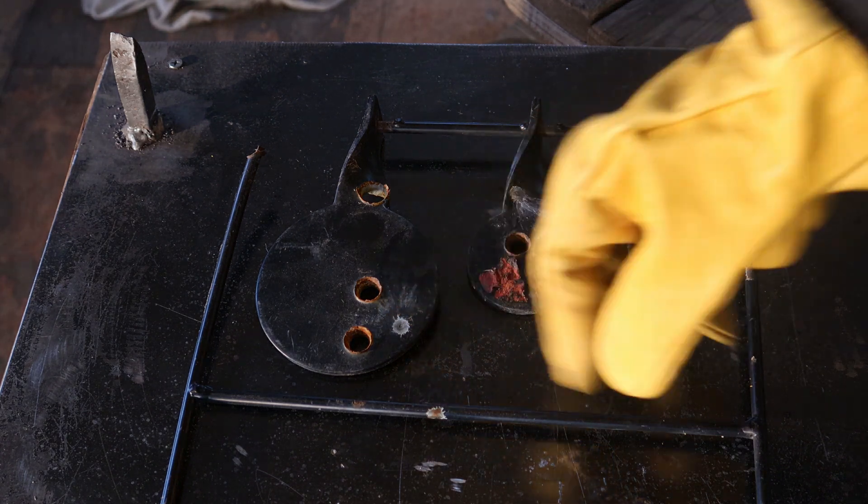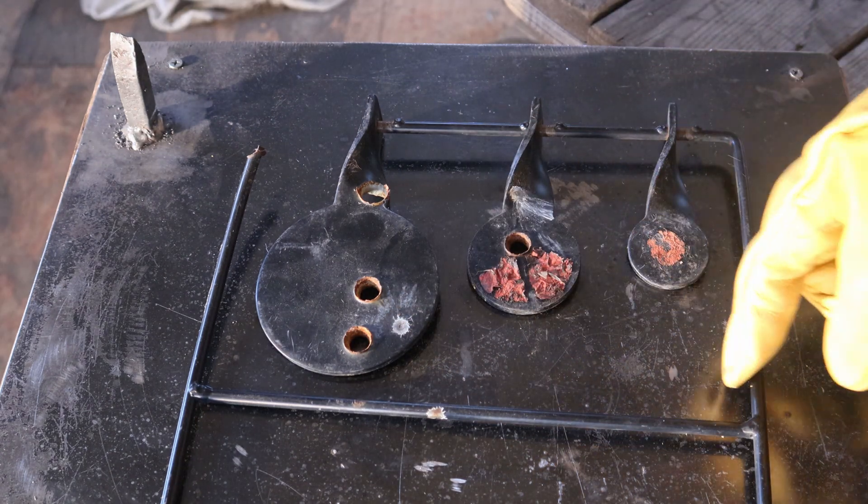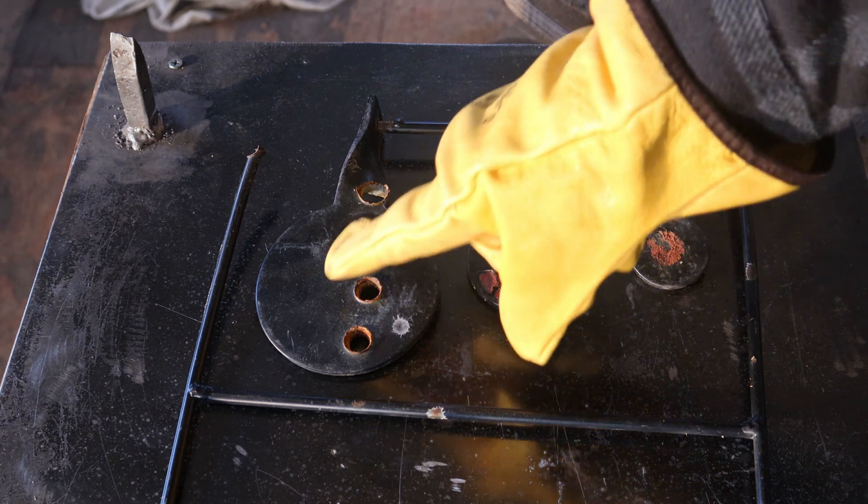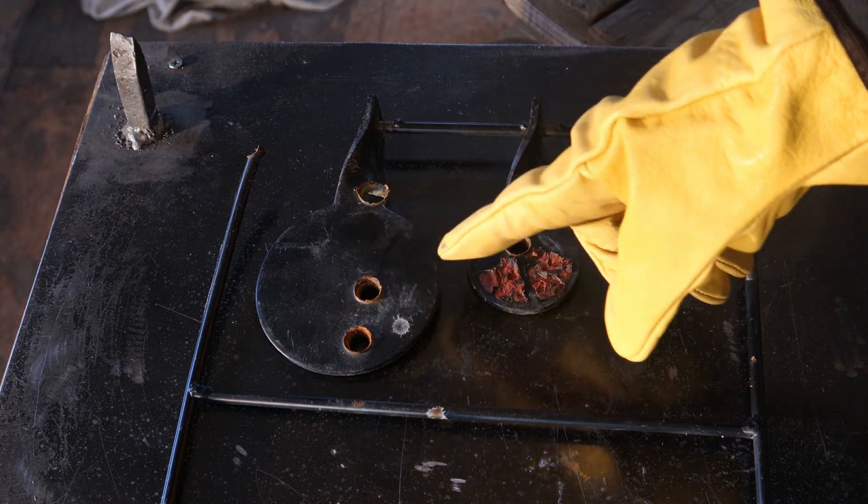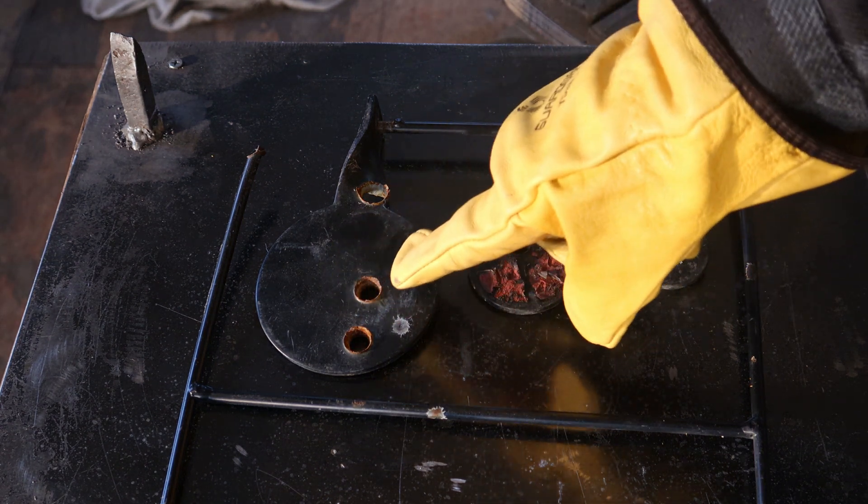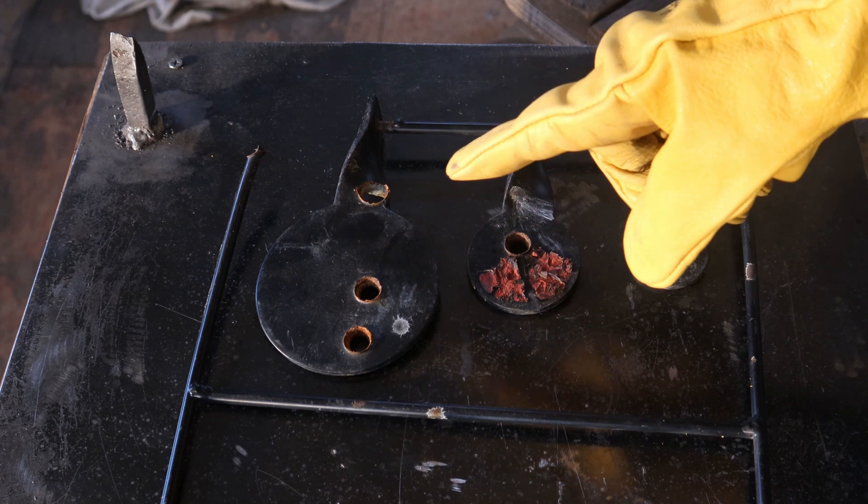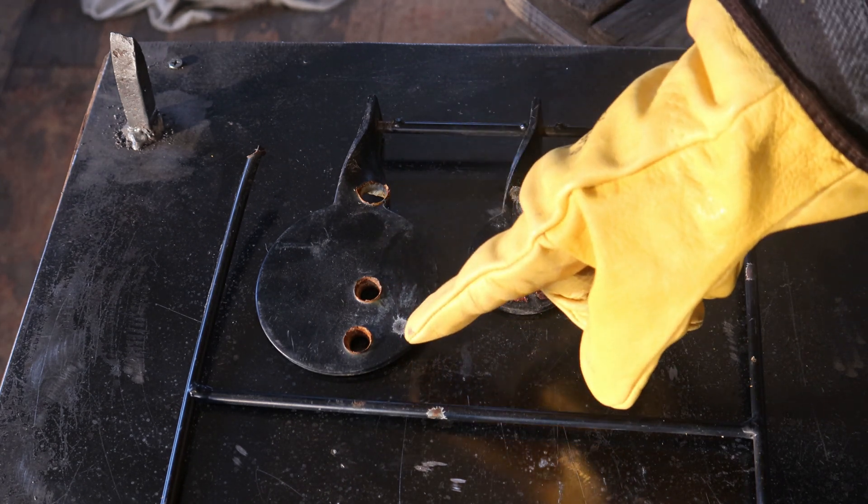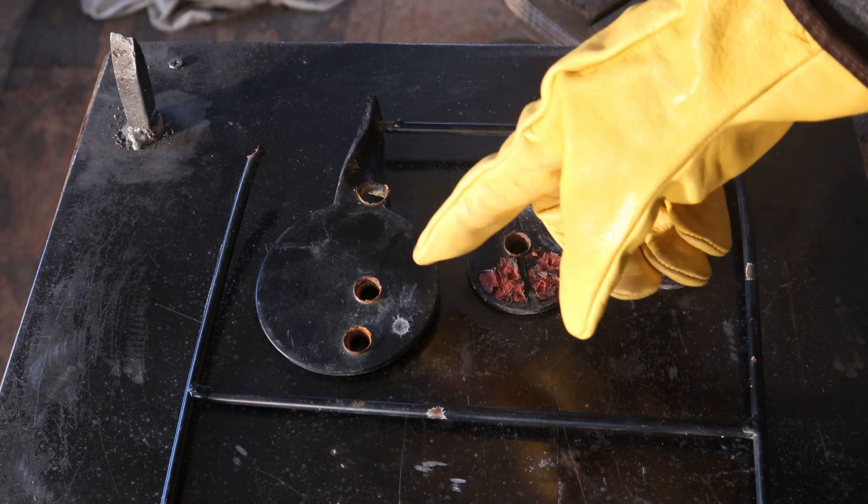Today I'm going to show you how to fix holes in steel. There's three steps to this process. The first step is removing the damaged material. Second step, I'm going to fill that hole with new material. And the third step, I'm going to remove excess material that I put in the weld.